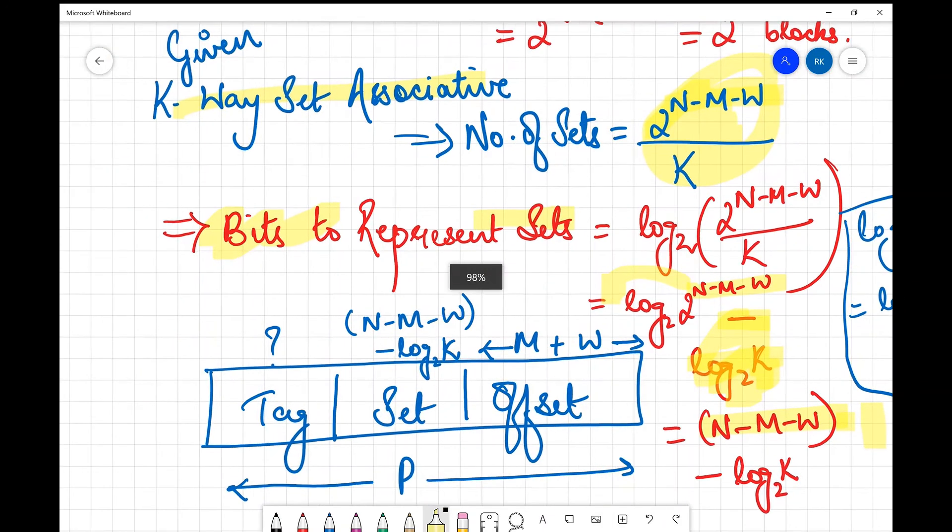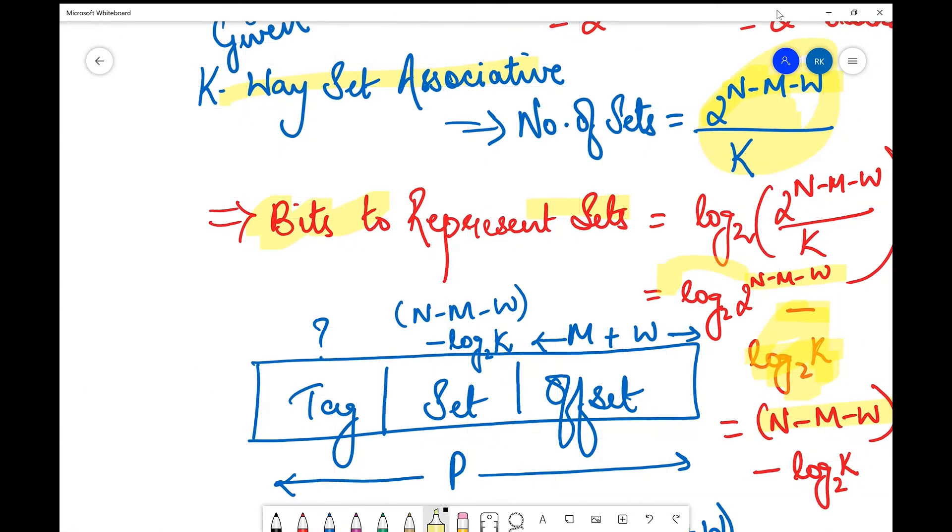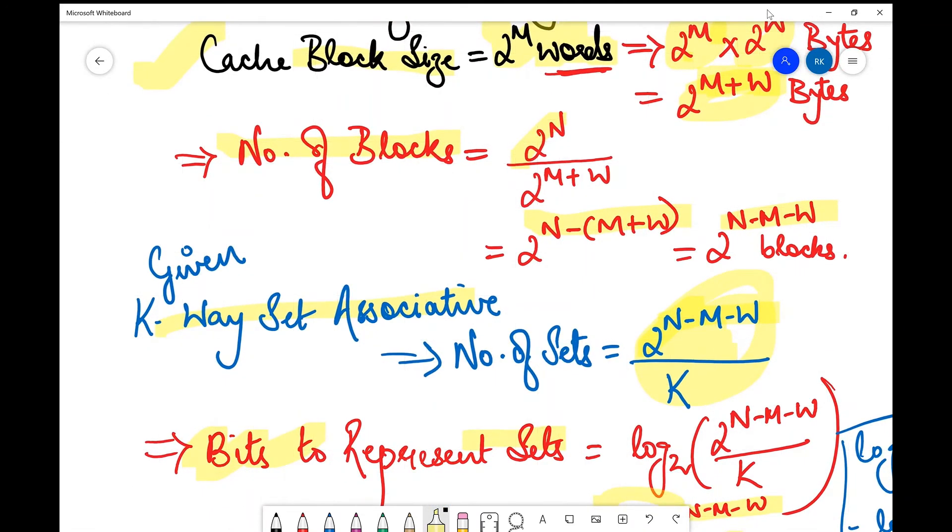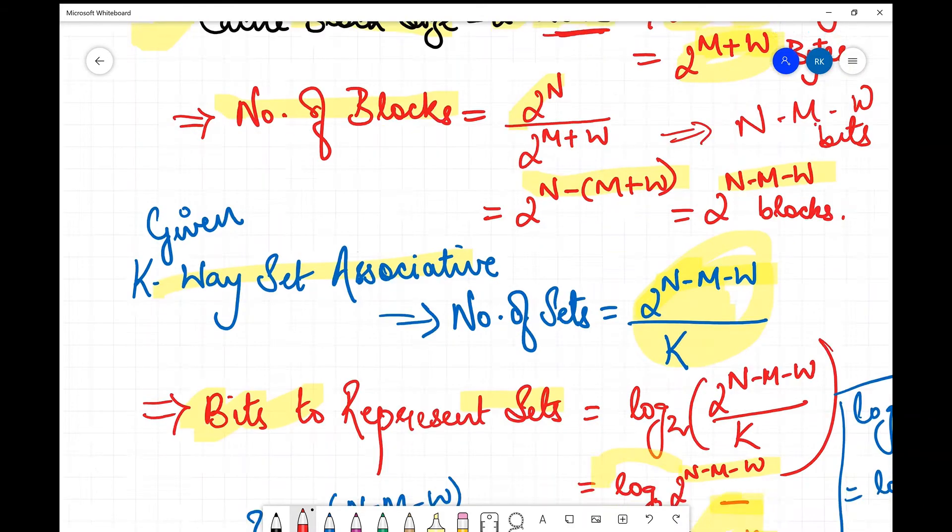Now final step - we represent our expression like this: our addresses have tag, then set, and then offset. We know that offset comes from the number of bits required to represent the blocks. Here, the number of blocks were 2^(n-m-w), so the number of bits required will be n-m-w bits. That is what I've written.